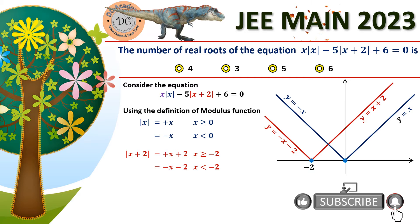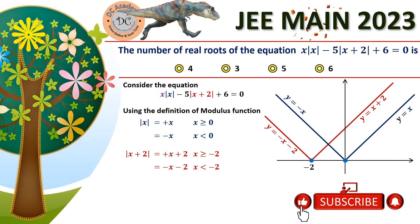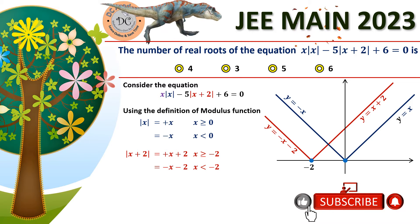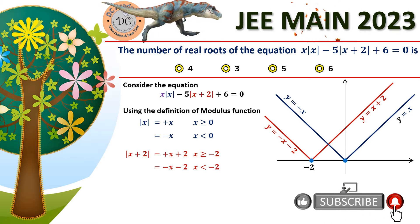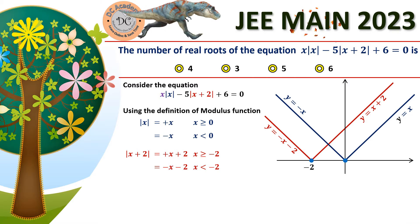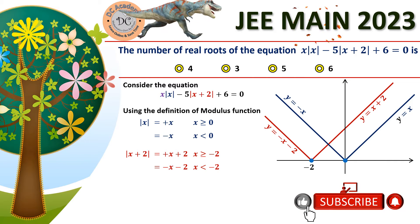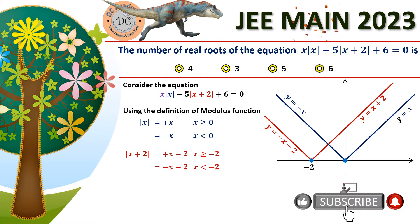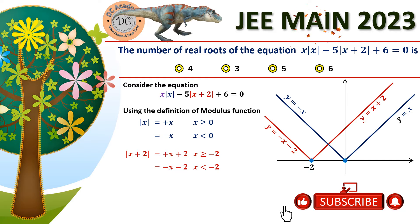Now we can rewrite the modulus functions in normal form and express the equation across three domains: (−∞, −2), [−2, 0), and [0, +∞). In each of these three domains all the modulus expressions will change, so we handle them separately.